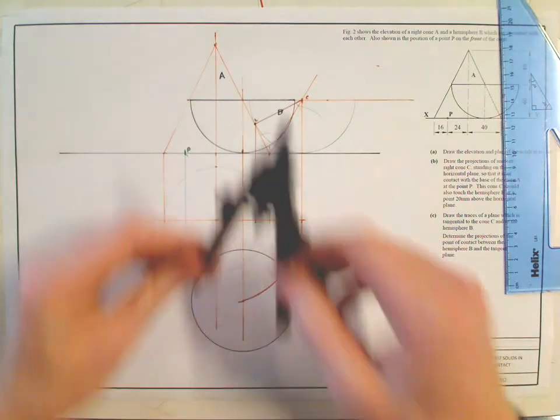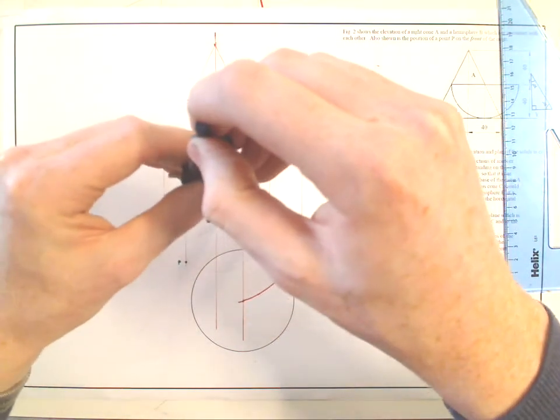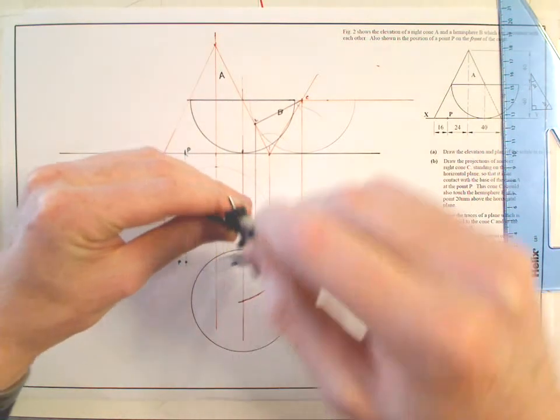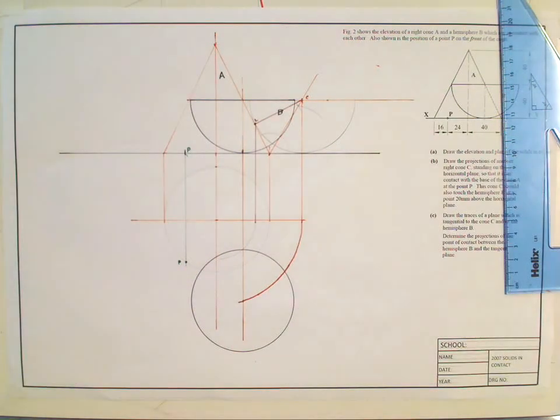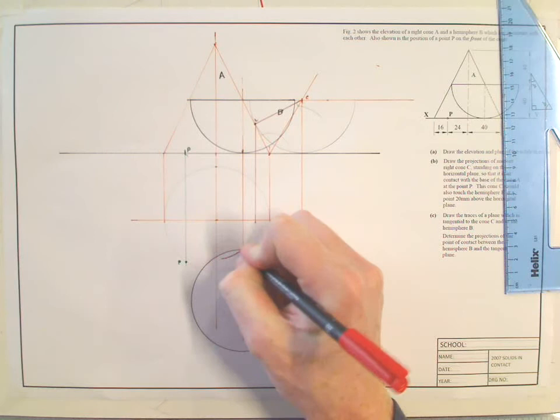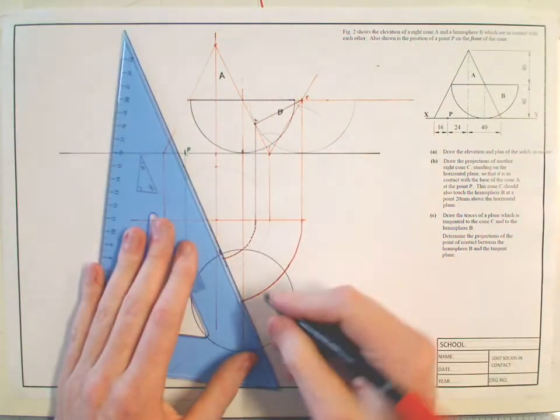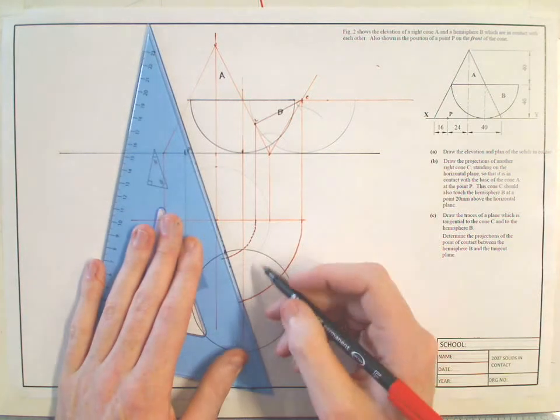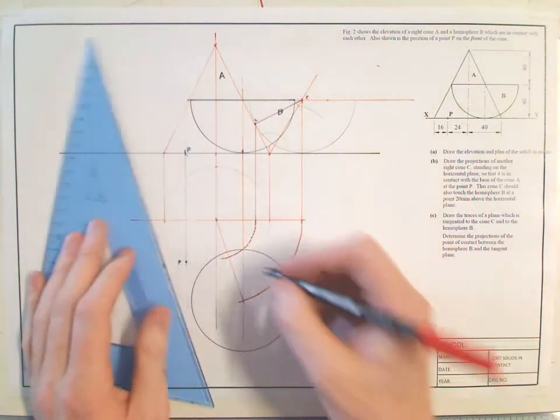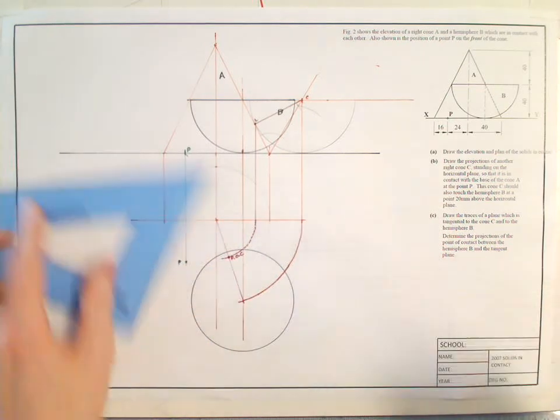And rotate that in plan as well. So my point of contact is along this red line here. Join a line between the two centers. That there is the point of contact between the hemisphere and the cone.